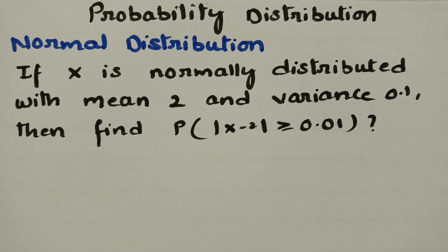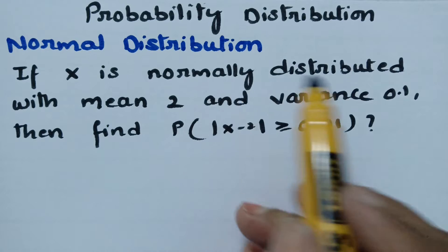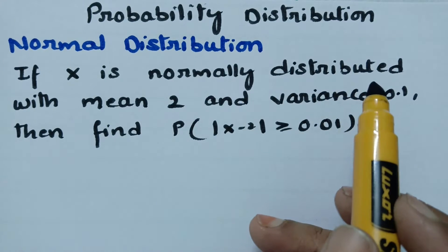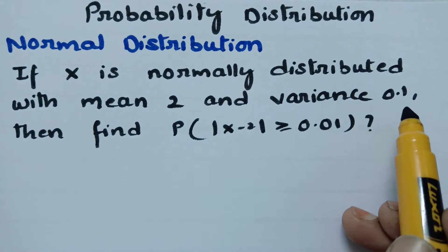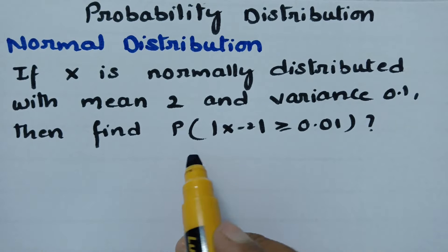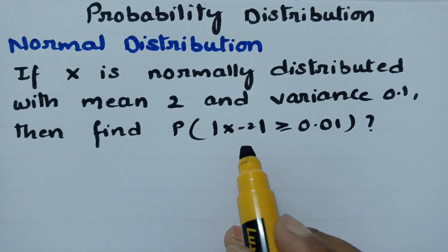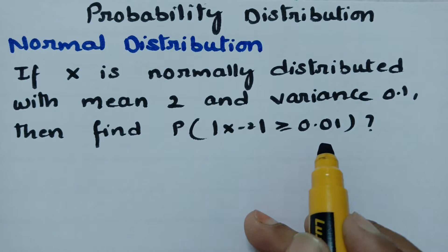Normal distribution. In today's video, the problem is: if x is normally distributed with mean 2 and variance 0.5, find the probability of modulus of x minus 2 greater than or equal to 0.01.